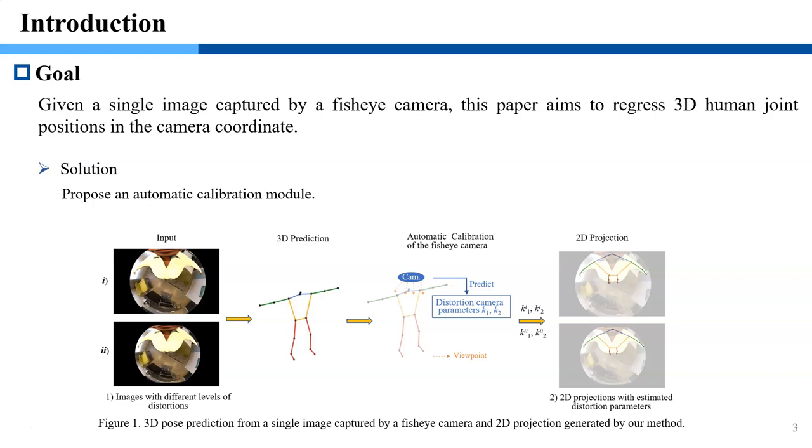Figure 1 shows the general procedure to achieve the task. It can be seen that our automatic calibration module estimates the camera parameters. Then, they are used to enforce the 3D pose to be consistent with 2D ground truth with image distortions. Therefore, the negative impact of image distortions is alleviated.